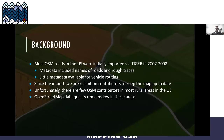A little bit of background: a lot of the roads in the U.S. were initially imported through the Tiger import in 2007-2008. That included limited metadata about the roads — the names and rough traces of them. Other tags, especially surface tags, just did not exist at all. In rural areas that becomes an issue because we have very few OSM contributors there, so we still have a lot of unedited Tiger import data.